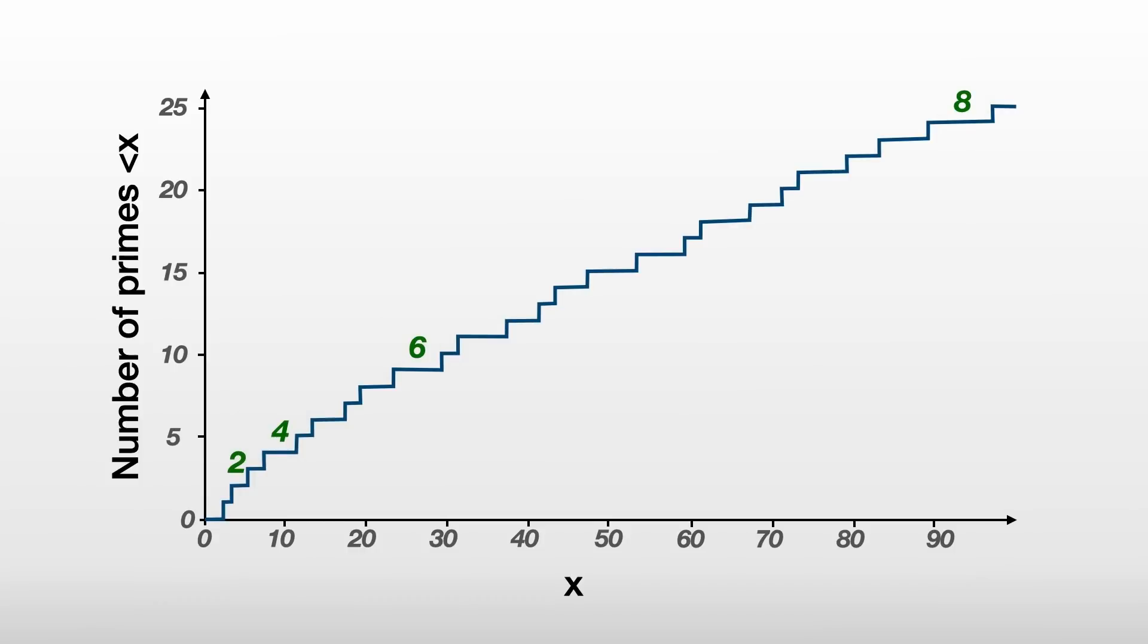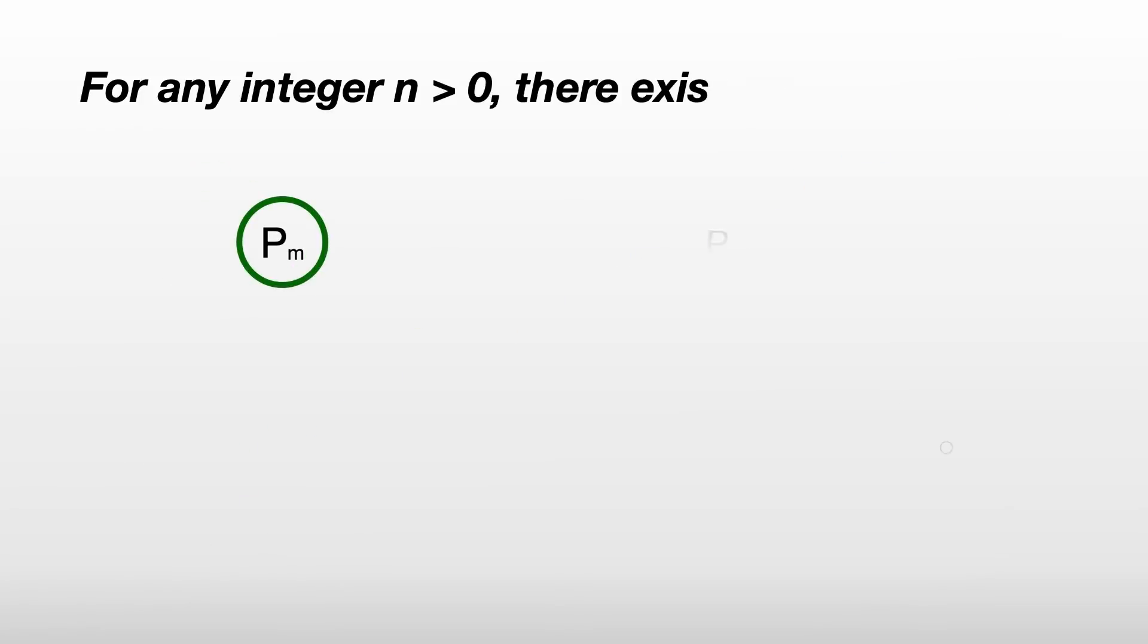And it's not that every consecutive prime has a larger gap. More specifically, we mean this. For any integer n greater than 0, there exist two consecutive primes with a gap of at least n.